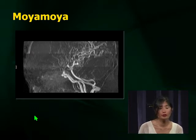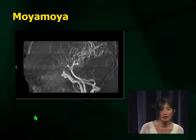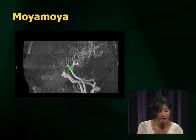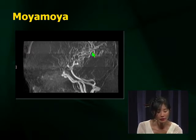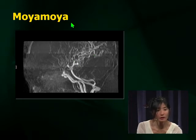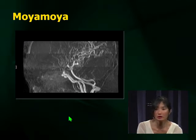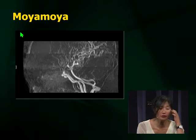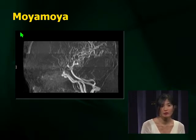This picture is of moyamoya disease. If they show you a picture of anything vascular, it's potentially moyamoya. Moyamoya means 'puff of smoke' — you see an abrupt cutoff at the supraclinoid portion of the internal carotid artery and then significant revascularization and collateralization. Moyamoya can be associated with sickle cell disease — always look at the vessels in sickle cell. Moyamoya can be intervened on with bypass surgery; it can also be associated with neurofibromatosis.